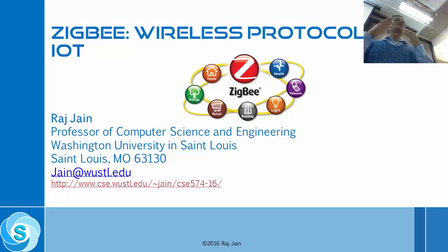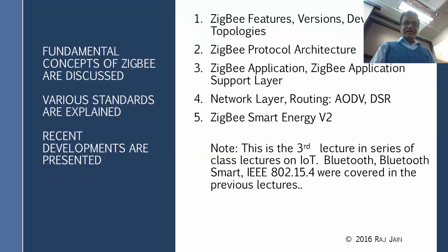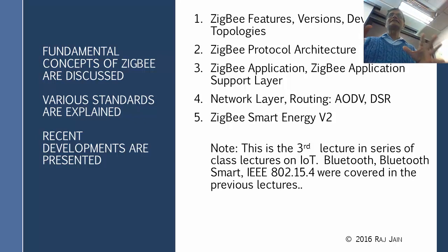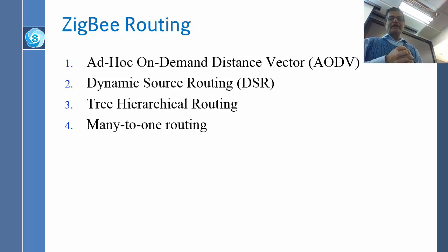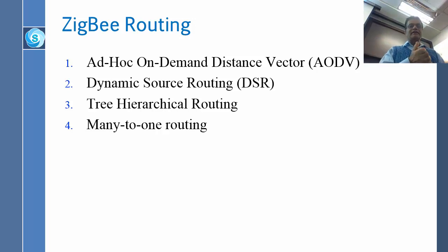Once you know the name, how do you get to that other name? So that is the next topic: ZigBee Routing. There are four methods: AODV, DSR, Tree Hierarchical Routing, and Many to One Routing.